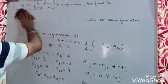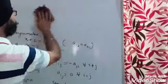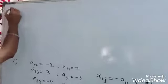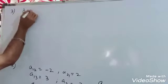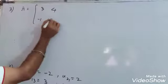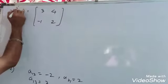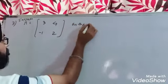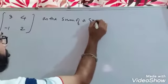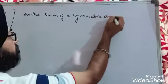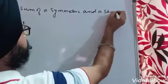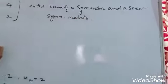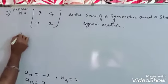Let's see one more example based on the property we just discussed. If A is [3, 4; -1, 2], let us express this square matrix A as the sum of a symmetric and a skew-symmetric matrix.